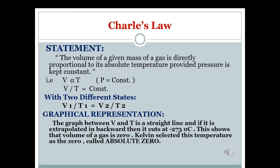Graphical representation: the graph between V and T is a straight line. We plot temperature on the x-axis and volume on the y-axis. If we extrapolate the graph in the backward direction, it cuts at minus 273 degrees Celsius, which shows that the volume of the gas is zero. Kelvin selected this temperature and called it absolute zero.